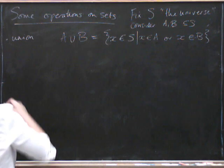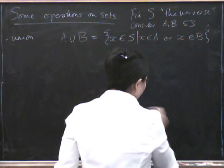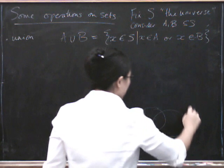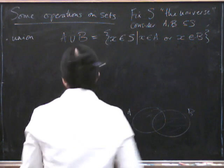Okay, so you've probably all seen Venn diagrams before. If this is A and this is B, then you can think of the union as being everything, anywhere.